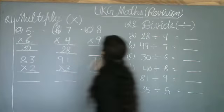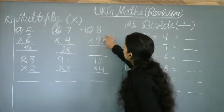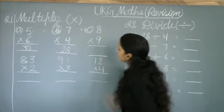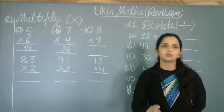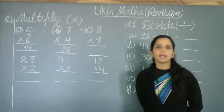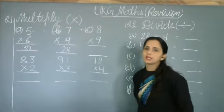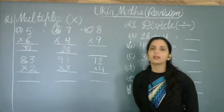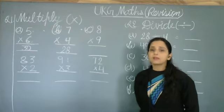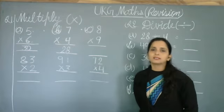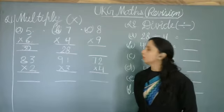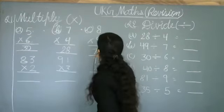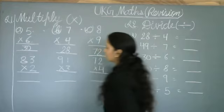Next, 9 table, 8 read. 9 times 8. If anyone is confused, read 9 table. 9 times 1 is 9, 2 is 18, 3 is 27, 4 is 36, 5 is 45, 6 is 54, 7 is 63, 8 is 72. So what will we write here? 72.